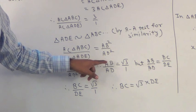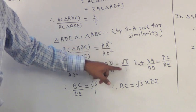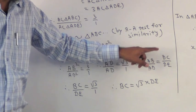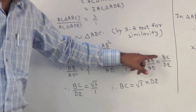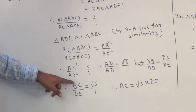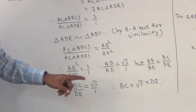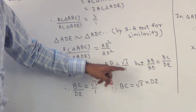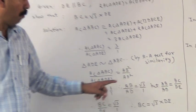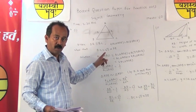Taking the square root, we get AB upon AD equals √3 upon 1. Since AB upon AD equals BC upon DE for corresponding sides of similar triangles, substituting gives BC upon DE equals √3 upon 1, so BC equals √3 into DE. We have proved what was asked in this example.